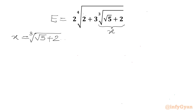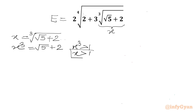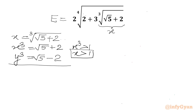Now we will cube both sides. So x cube will be equal to square root 5 plus 2. Now square root 5 is approximately 2.23, plus 2 will be greater than 1. So x cube is greater than 1, which means x must be greater than 1. Now I will assume y cube which is the conjugate of x cube, so root 5 minus 2. We can subtract the second equation from the first: x cube minus y cube equals 4. This is equation number 1.